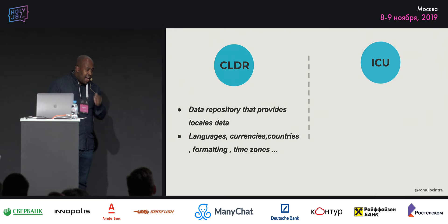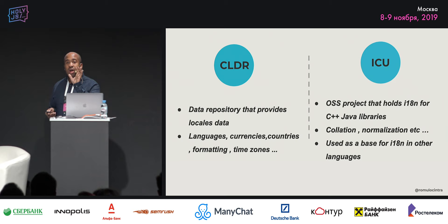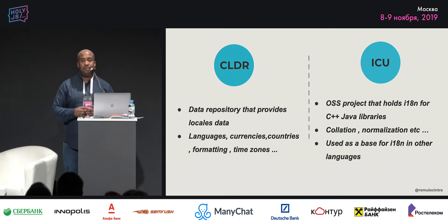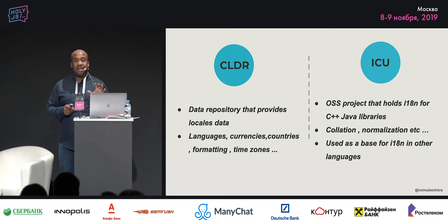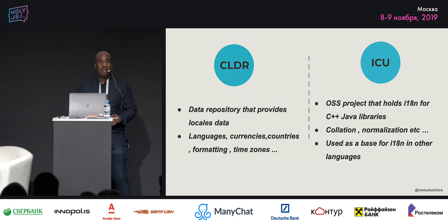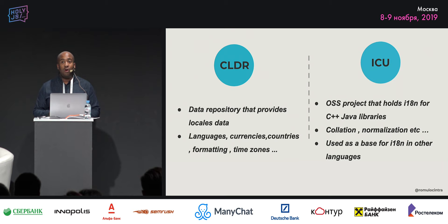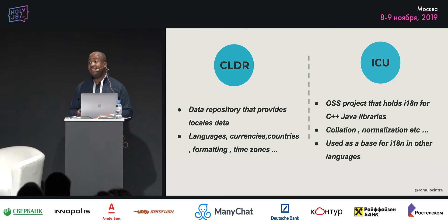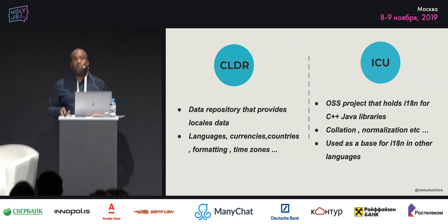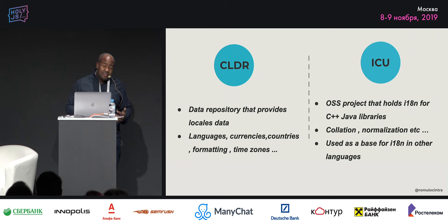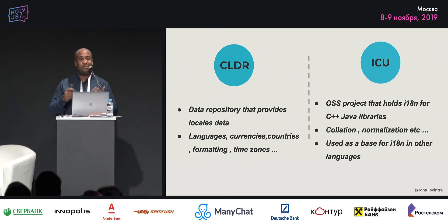After we have ICU. ICU is an open source project that tries to reflect that data from that huge database of words, numbers, and characters that represent different kinds of languages. They try to expose methods for different languages like collation, normalization, and formatters. It's the base of internationalization for different languages. In JavaScript, we are using ICU as a base of our Intl API — we are just mirroring what ICU does to the browser and to JavaScript.